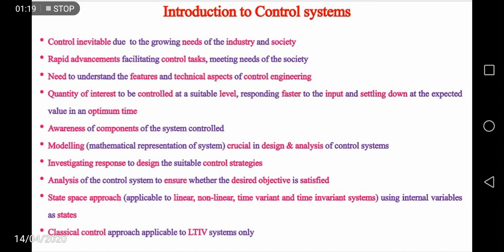If we want to select a suitable control task or control tasks, depending upon the application, in any control application it is desired that the quantity of interest or the parameter of interest is controlled at a suitable level and suitable range. It has to respond faster to the input and settle down at the expected value in an optimum time. To accomplish this control task, one should be aware of the components of the system which is controlled.